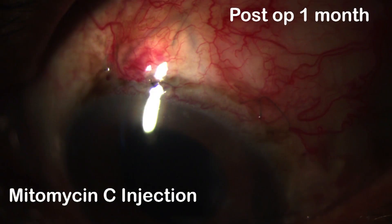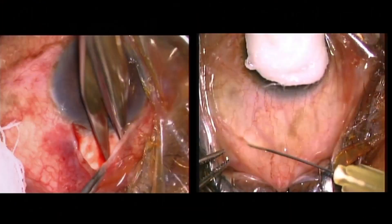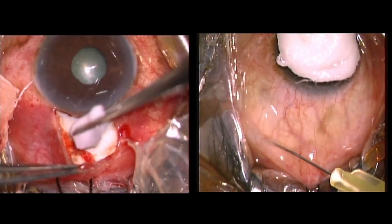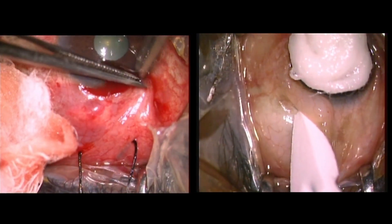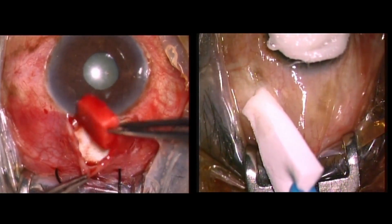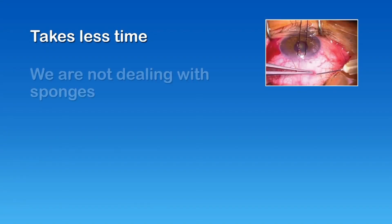Here are a few photographs showing the bleb morphology of both the sponge and the injection methods. The aim of this video is to demonstrate the advantages of the injection method over the sponge method. The injection takes less time. We are not dealing with sponges, so there is no risk of losing them in the eye, which can cause infections.